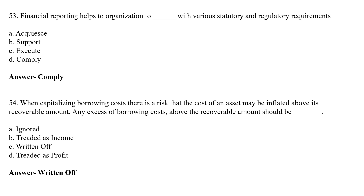When capitalizing borrowing costs, there is a risk that the cost of an asset may be inflated above its recoverable amount. Any excess borrowing costs above the recoverable amount should be — Option A: Ignored, Option B: Treated as Income, Option C: Written Off, Option D: Credited as Profit. The correct answer is Option C — Written Off.